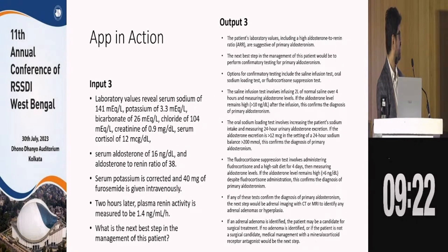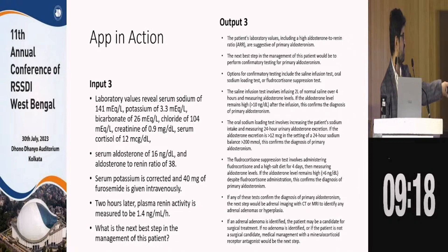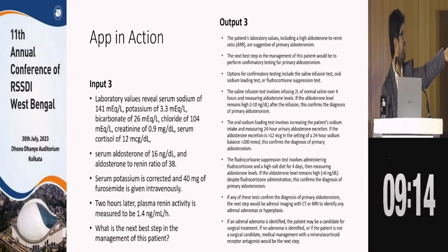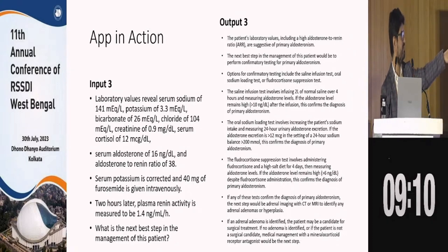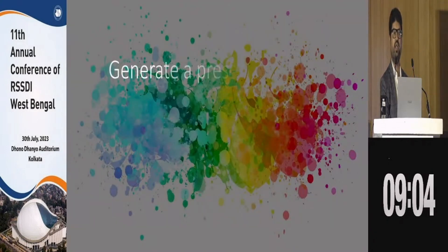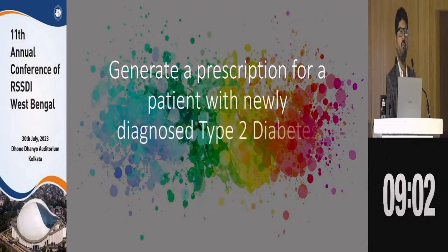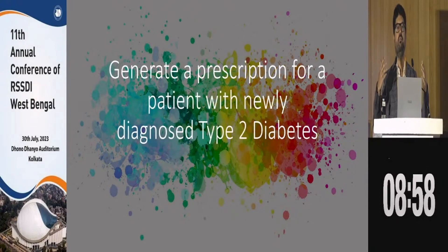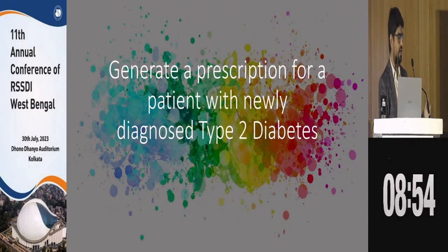We then input the lab values: aldosterone is 16, aldosterone-to-renin ratio is 38, potassium is 4.0. We ask: 'What's the next best step?' The output says the patient has primary aldosteronism. So that's part one — the whole idea is to help doctors make better diagnoses.